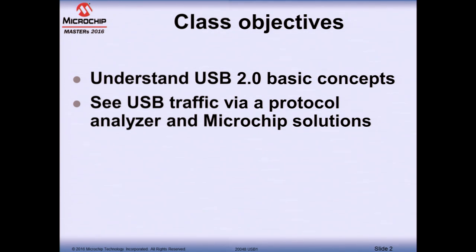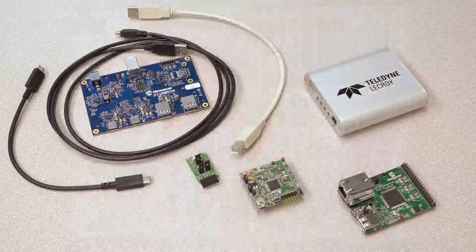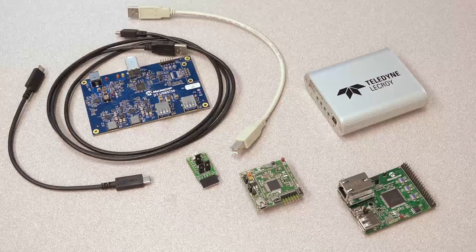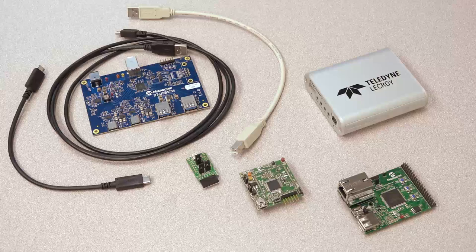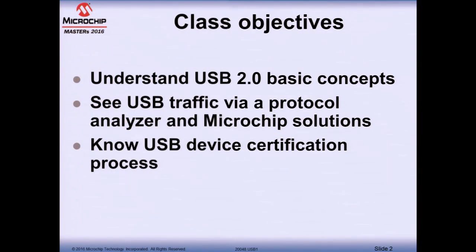In order to understand USB 2.0, being able to see and understand the traffic on the bus while developing our application will be useful. So we will learn more about the protocol details and use a bus analyzer — that silver box there — to see what's going on on the bus. We'll also look at how to get a certification for your project, meaning a statement that your design matches the official USB specification, and how to go through the necessary steps.